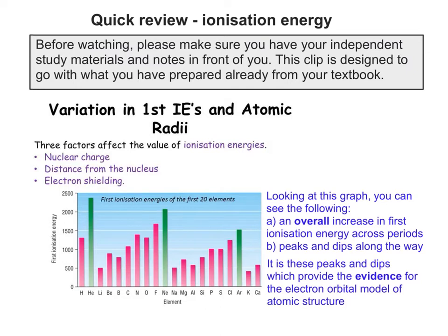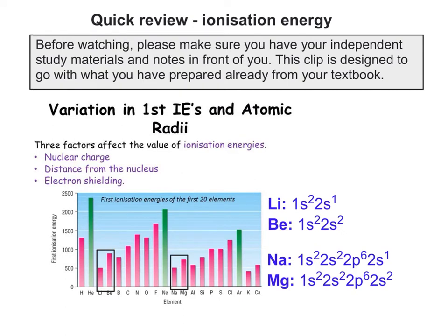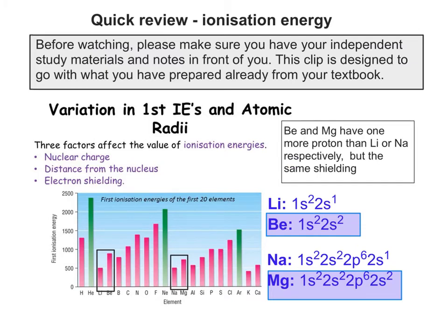What you'll need to do at this point is follow along by drawing out the electron configuration of each element as I go through them. Noble gases have the highest first ionisation energies because their nuclear charges are the highest in their periods — they're on the far right in group 8. Looking at pairs like lithium and beryllium, or sodium and magnesium, there is an increase in ionisation energy in the second element, because it has a higher proton number but the same shielding. So it requires more energy to remove one of the electrons in the 2s or 3s orbital.